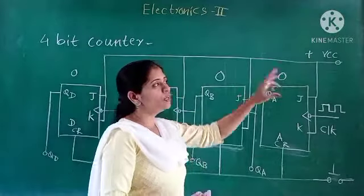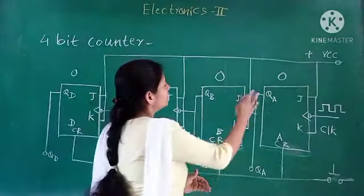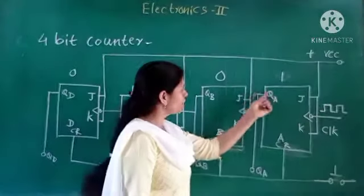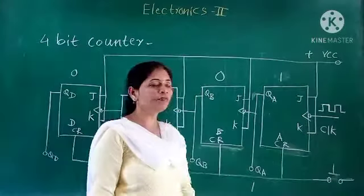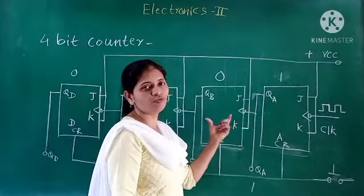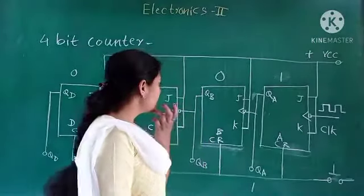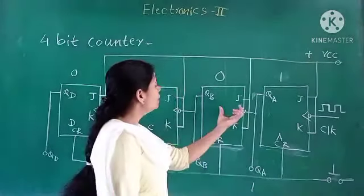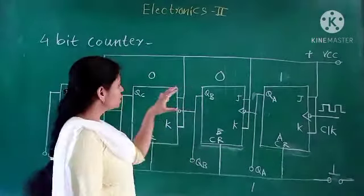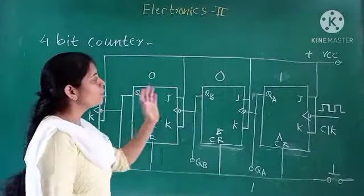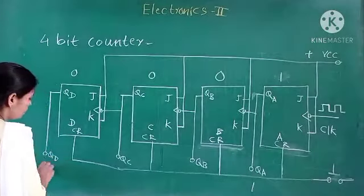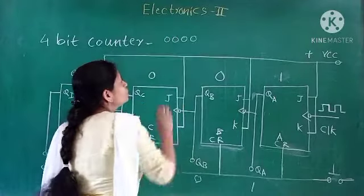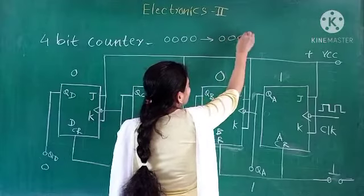So the output of QA changes from 0 to 1. This 1 then goes to the clock input of the next flip-flop, but since this is a positive change (not a negative change), the next flip-flop will not toggle. The remaining flip-flops also do not toggle and remain the same. So at the first clock pulse, the output changes from 0,0,0,0 to 0,0,0,1, which is the binary equivalent of 1.